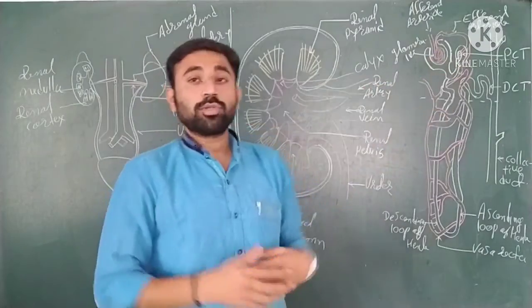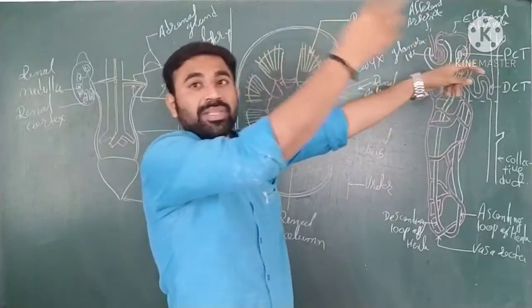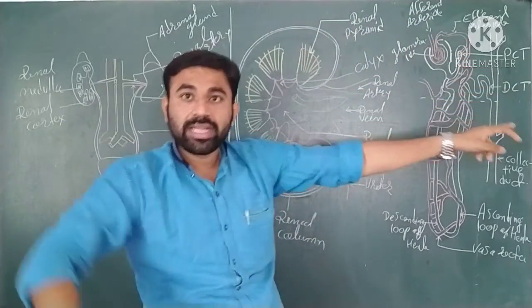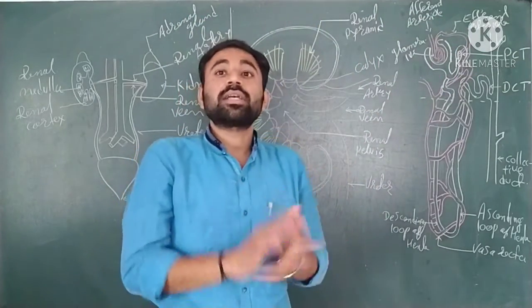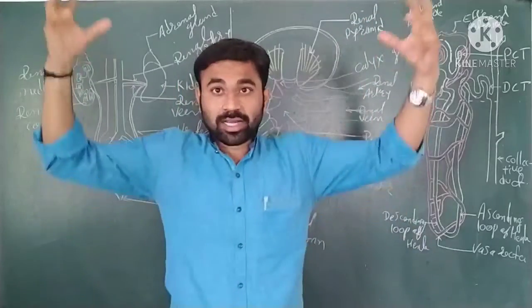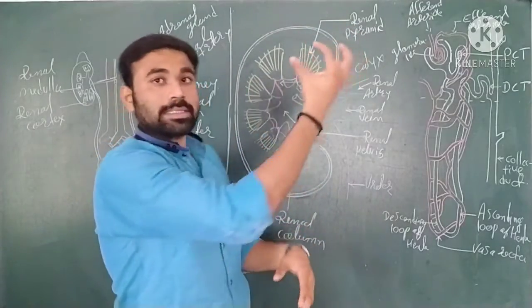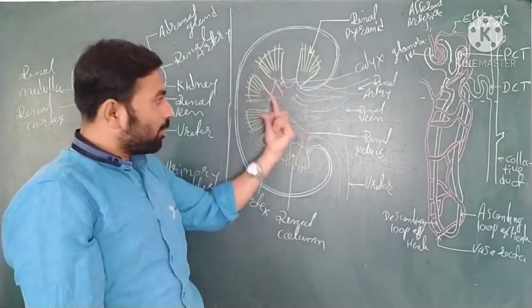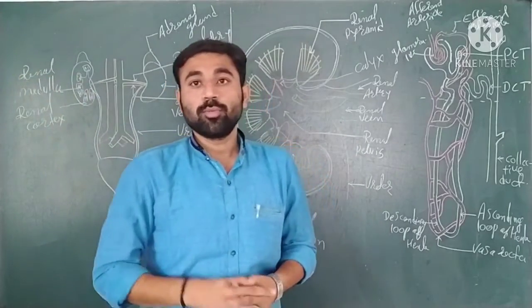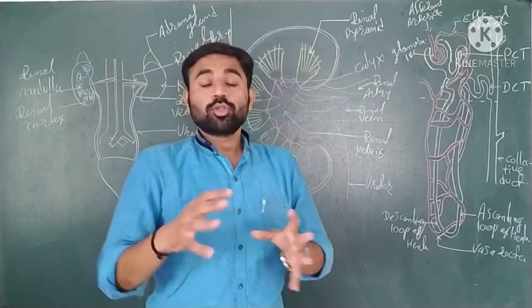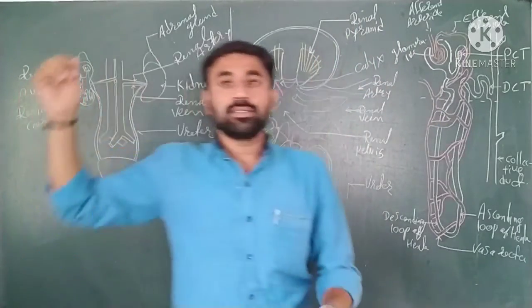So the sequence of filtration through the nephron is: Bowman's capsule → PCT → loop of Henle → DCT → collecting ducts. The collecting ducts unite together to form larger ducts, which open into the renal pelvis. From the renal pelvis, urine passes through the ureter to the urinary bladder, and then exits through the urethra.